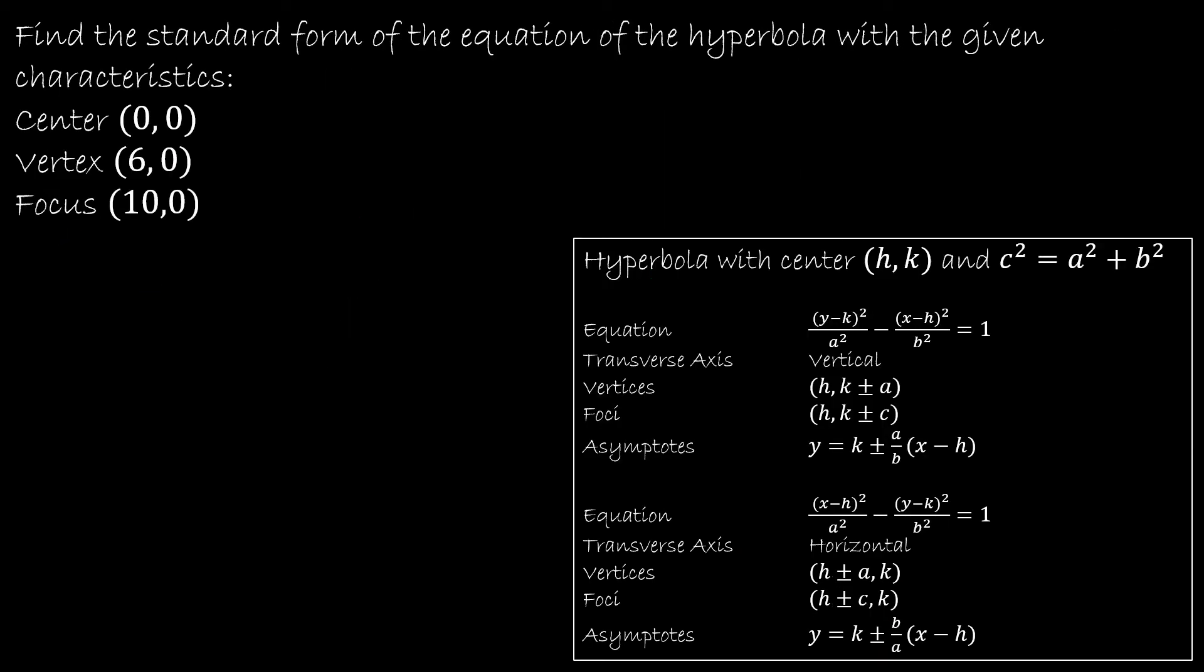Let's do one last example where we are working in reverse to find the standard form of the equation given certain characteristics. So the first thing I notice is that they've given me the center. So I know that the center is 0, 0. Therefore, H is 0 and K is 0. What else do I notice? Well, I also notice that all of my Y values are the same. They're all K. And so that tells me that I'm dealing with a horizontal transverse axis.